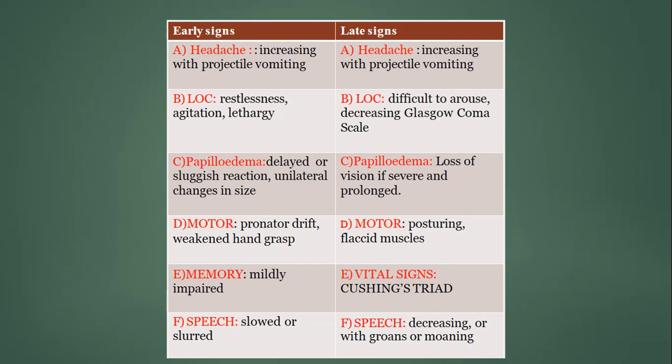Early and late signs of raised ICP include headache and loss of consciousness, which can appear both early and late — though late-stage loss of consciousness is harder to arouse with decreasing GCS. Papilledema is more characteristic of delayed features. Different posturing patterns indicate motor disturbance, memory loss can be an earlier sign, and the Cushing triad is typically observed late, though some of its components may appear early.